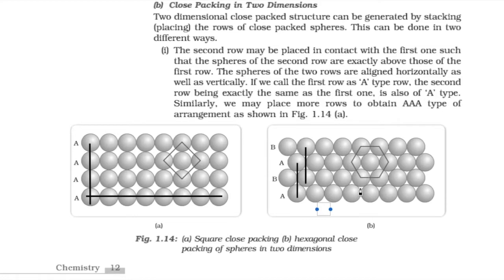The spaces present between the spheres are known as voids — these empty spaces are in the shape of triangles. These triangles are of two types: one in which the apex is in the downward direction and another in which the apex is in the upward direction.